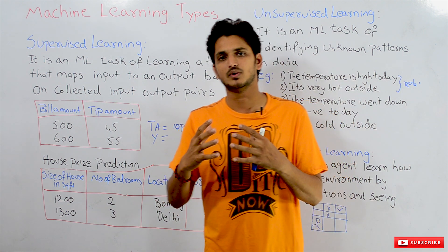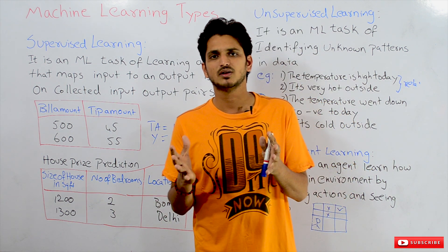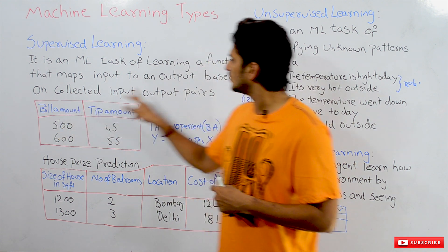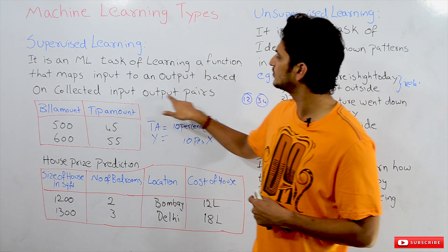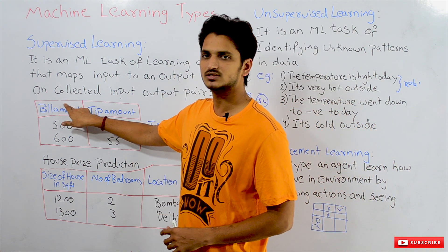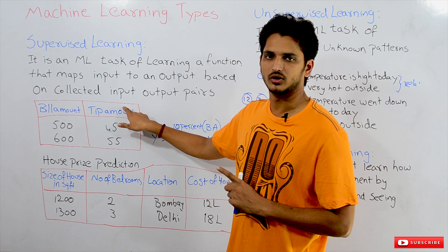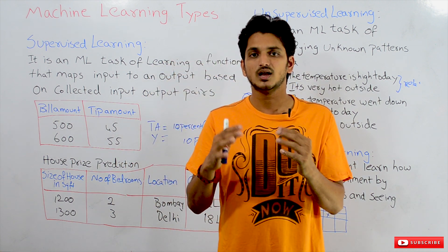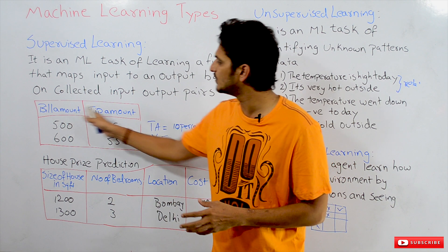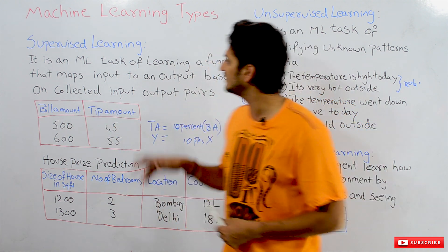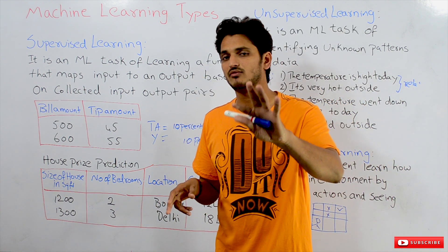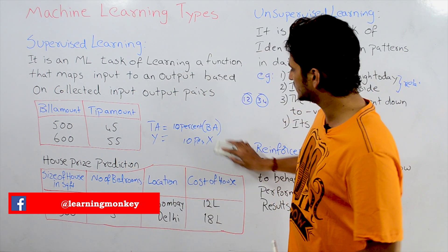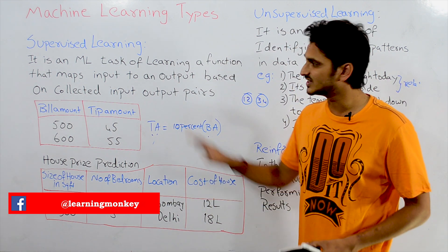Let's check how our last example fits into supervised learning. Our last class example was: we have to predict the tip amount based on bill amount. Here, bill amount is the input and tip amount is the output. We collected some data related to input-output pairs — bill amount and tip amount. Based on the collected data, we identified a mathematical function: tip amount equals 10% of the bill amount. That's what the definition says.